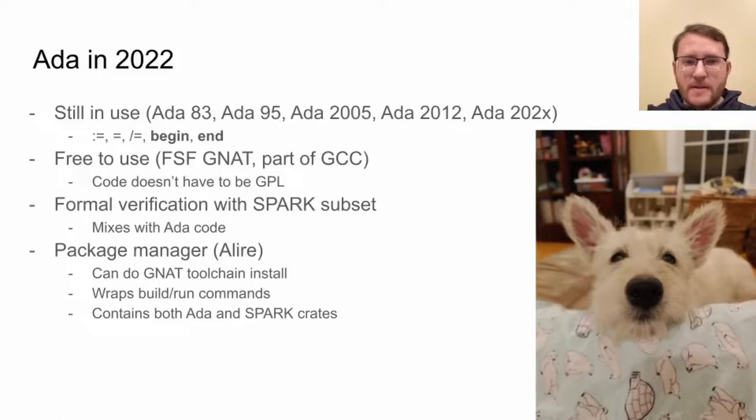The PASCAL influence can be seen in the use of colon equals for assignment, which is a statement, not an expression like in C++. It also uses single equals for equality, slash equals for not equal, and begin and end keywords instead of curly braces for blocks. In addition, due to the language not being built around object-oriented programming, there are some interesting consequences on program organization and structure.